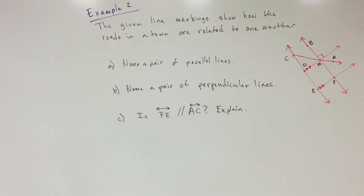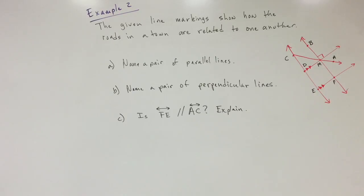Next is example two. It says: the given line markings show how the roads of a town are related to one another. Part a asks to name a pair of parallel lines. Part b asks to name a pair of perpendicular lines. Part c asks whether line FE is parallel to line AC, and to explain.